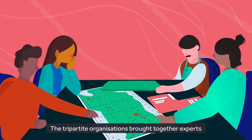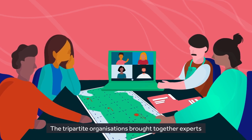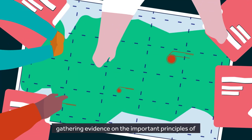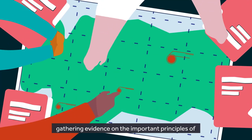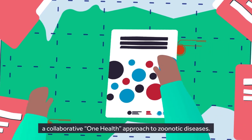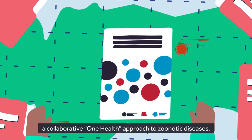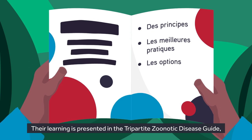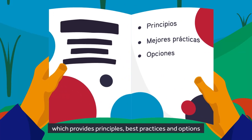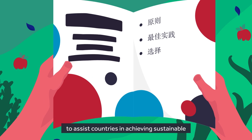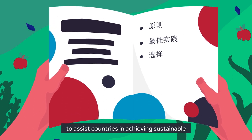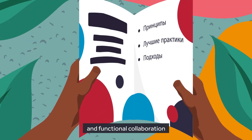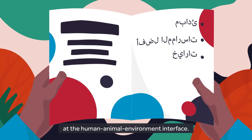The Tripartite organizations brought together experts from around the world to help do just that. Gathering evidence on the important principles of a collaborative, One Health approach to zoonotic diseases, their learning is presented in the Tripartite Zoonotic Disease Guide, which provides principles, best practices and options to assist countries in achieving sustainable and functional collaboration at the human-animal-environment interface.